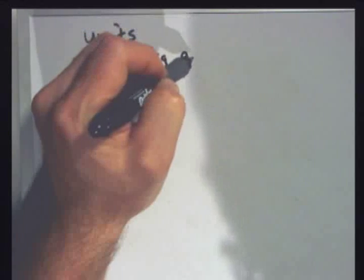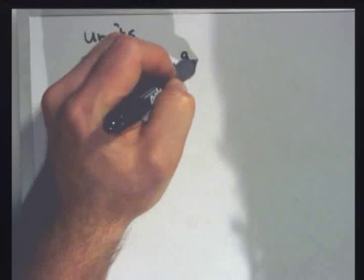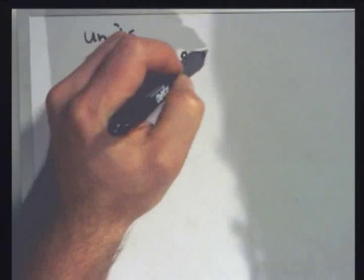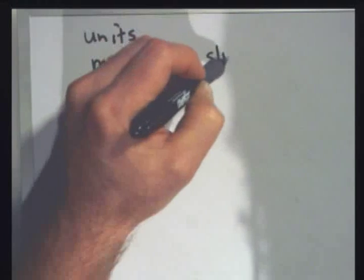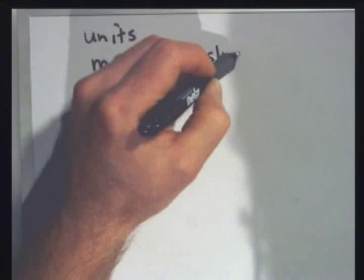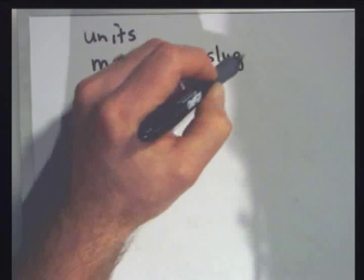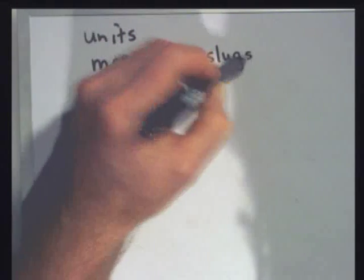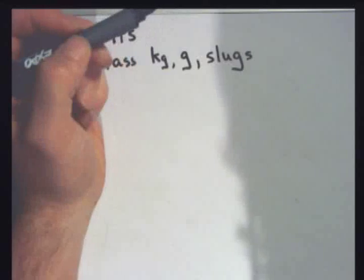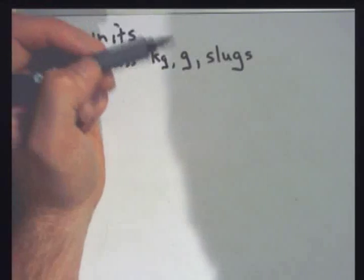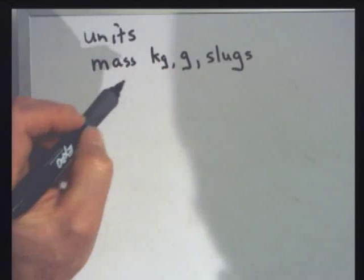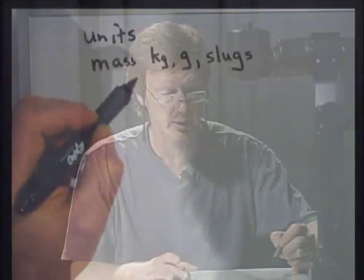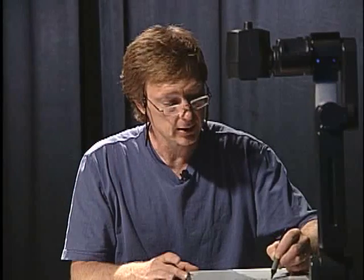Mass is given in units of kilograms and grams — those are metric. There are other versions. In English units, we use slugs — a Pacific Northwest favorite, but seldom used. We don't talk about mass very much in English units; we talk about it quite a bit in metric units.